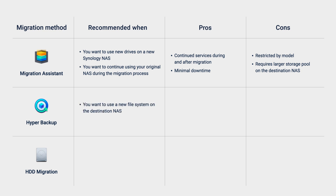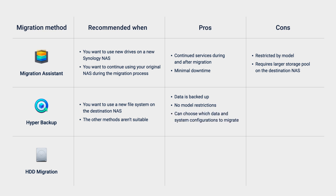Use Hyper Backup if you want to use a new file system on the destination NAS, or if the other methods aren't suitable for your situation. Since Hyper Backup is a backup solution, using it to migrate your data means you'll also have a backup on hand. Using backup data restoration for migration is more secure since the original data won't be affected. There are no restrictions by model, and you can choose which data and configurations to migrate. However, migration takes longer and the storage space on your destination NAS must be twice the size of the source.